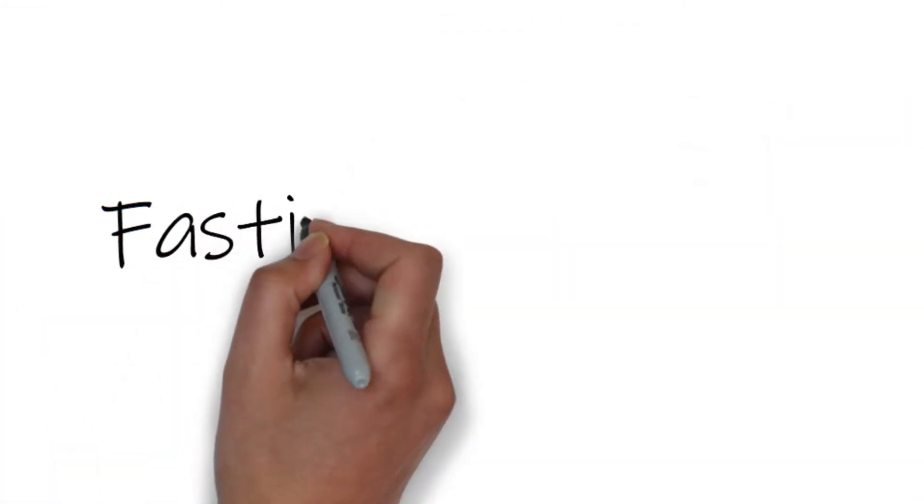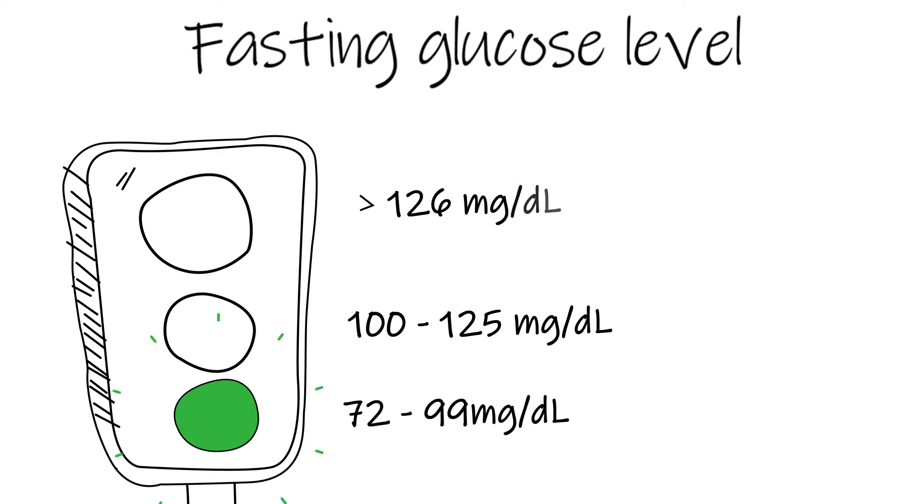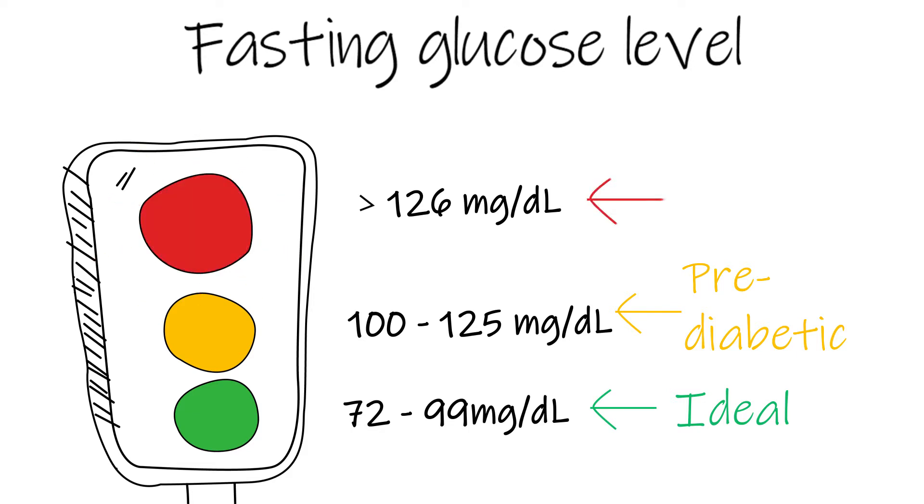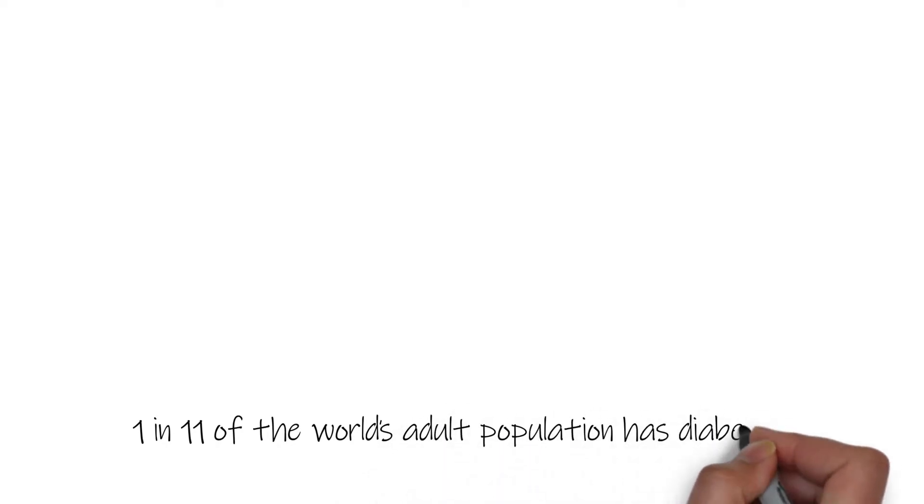An ideal fasting glucose range is between 72 and 99 milligrams per deciliter. A fasting glucose level of 100 to 125 milligrams per deciliter is classified as pre-diabetic, and a fasting glucose level above 126 milligrams per deciliter lands a diagnosis for diabetes. One in 11 of the world's adult population has diabetes.